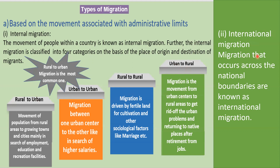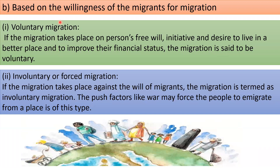The other type is international migration — migration that occurs across national boundaries. Based on the willingness of migrants, when people voluntarily and willfully move, it is called voluntary migration. When they are forced to move, it is called involuntary migration.